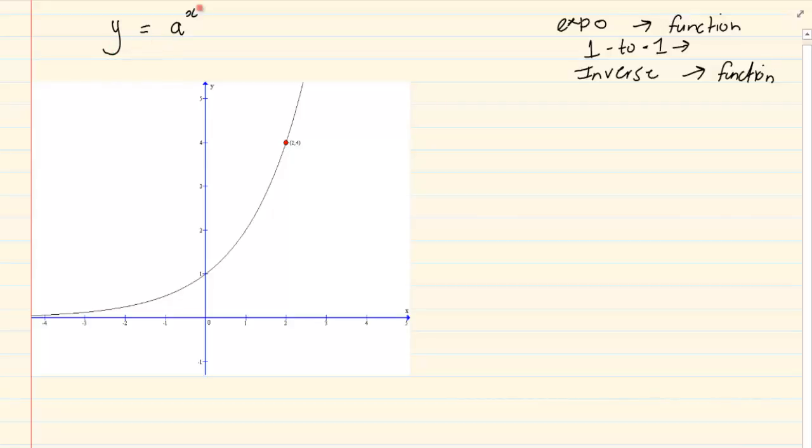It says y is equal to a to the power of x. Now usually when they are giving you the exponential graphs, they don't start by giving you the formula. They will tell you y is equal to a to the power of x. Solve for a.